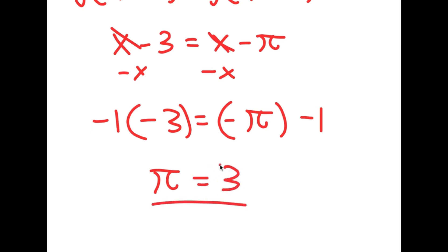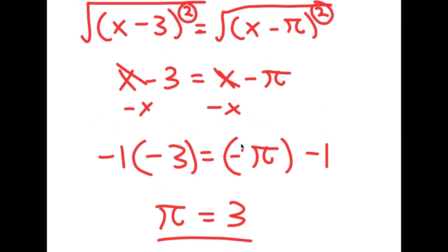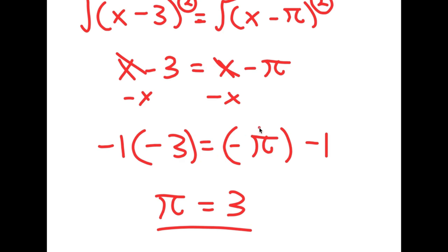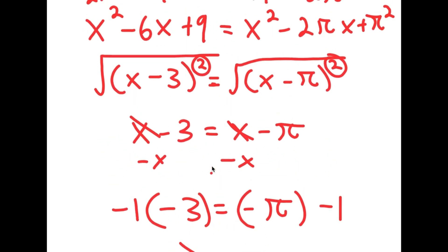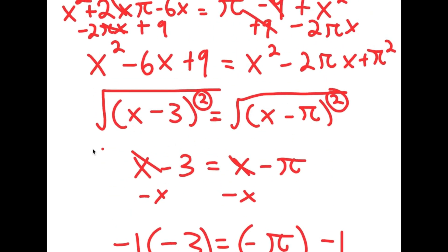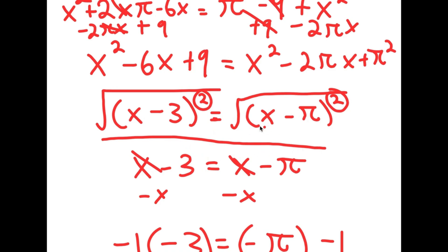So there you have it — I just proved that pi is equal to 3. But where did I go wrong? Because obviously we know that pi is not equal to 3. I actually went wrong on the step where I said the square root of (x minus 3) squared and the square root of (x minus pi) squared equal x minus 3 and x minus pi respectively.